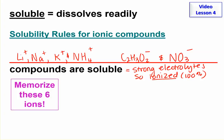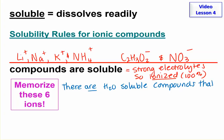You need to memorize the six ions in order to be able to do Lesson 4 and the test. An important note: I'm not saying that these are the only compounds that are water soluble. There are other compounds that don't have one of these ions that are still water soluble. All I'm telling you is that if a compound does have one of these ions, we know for sure that it is water soluble.